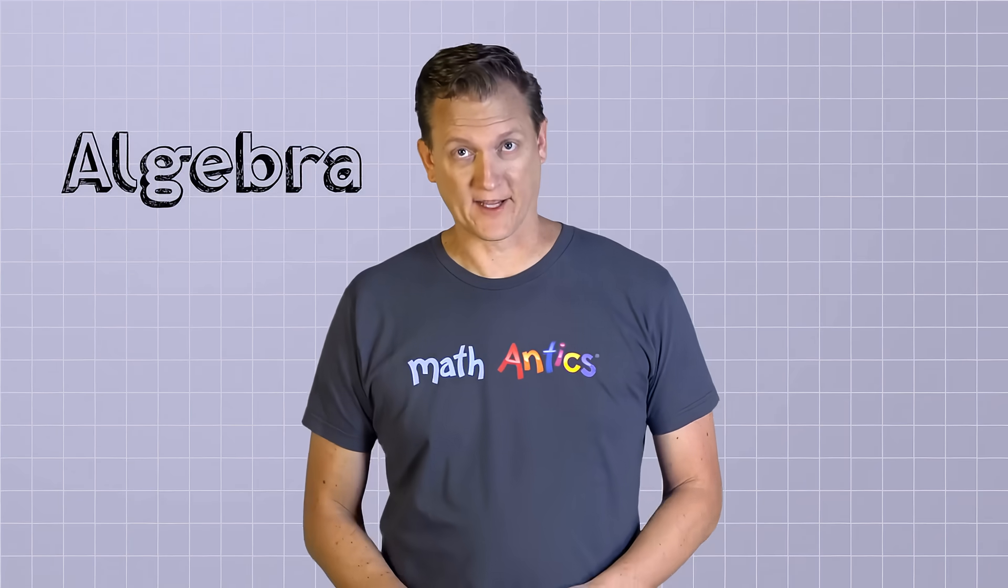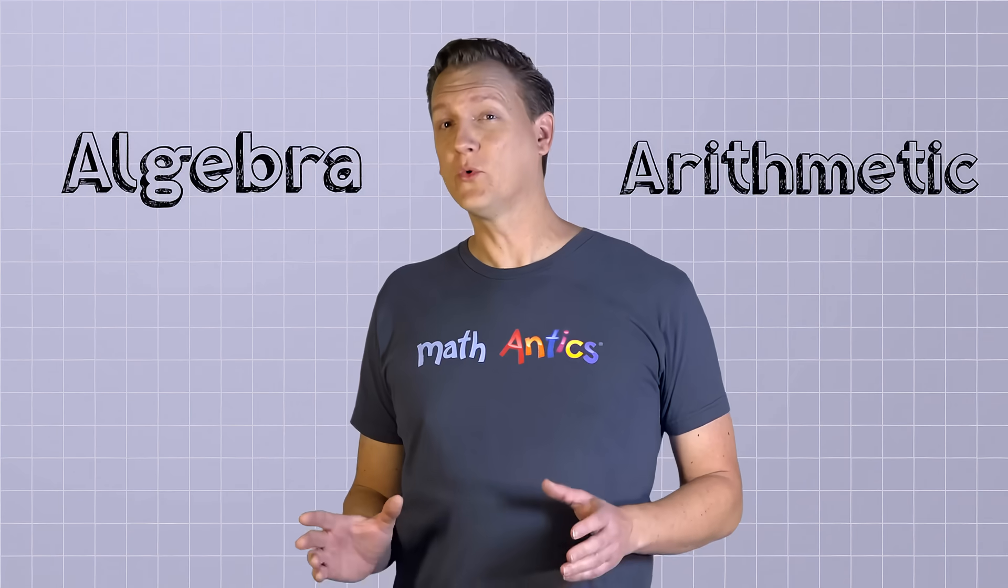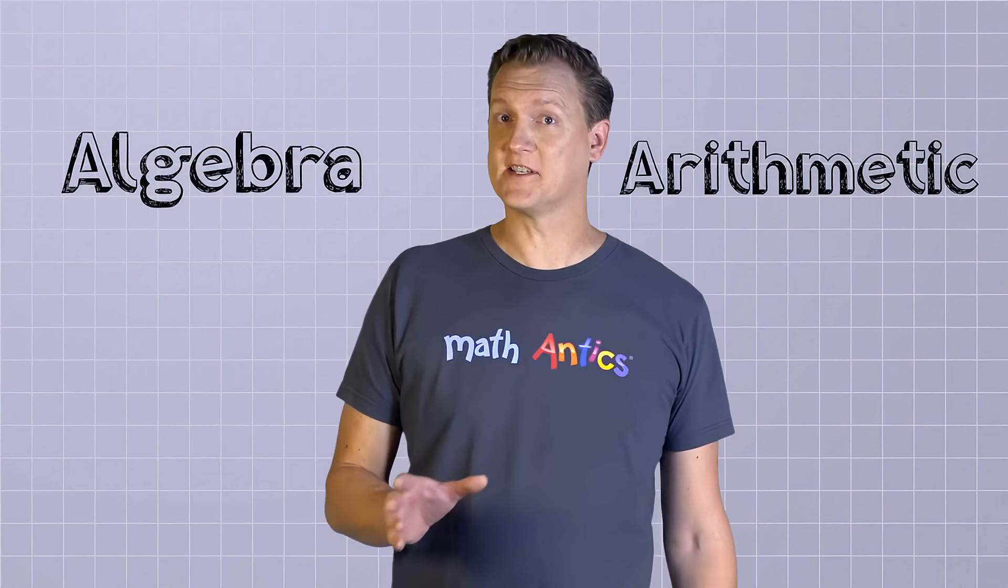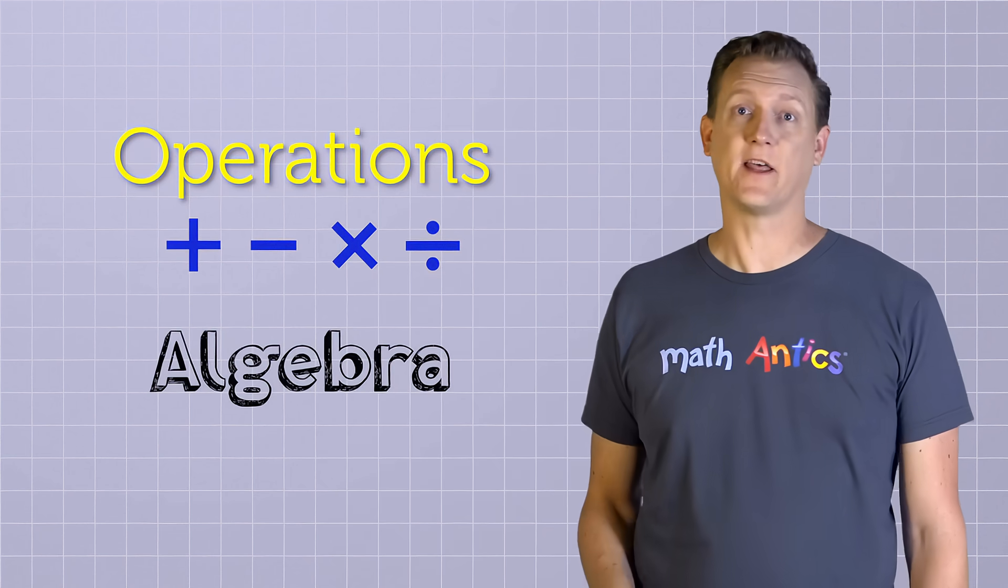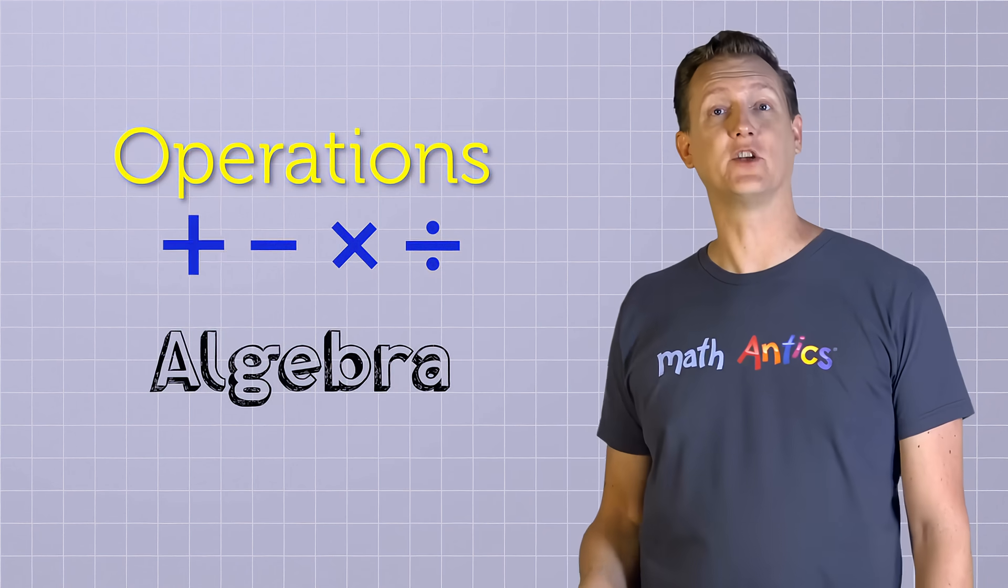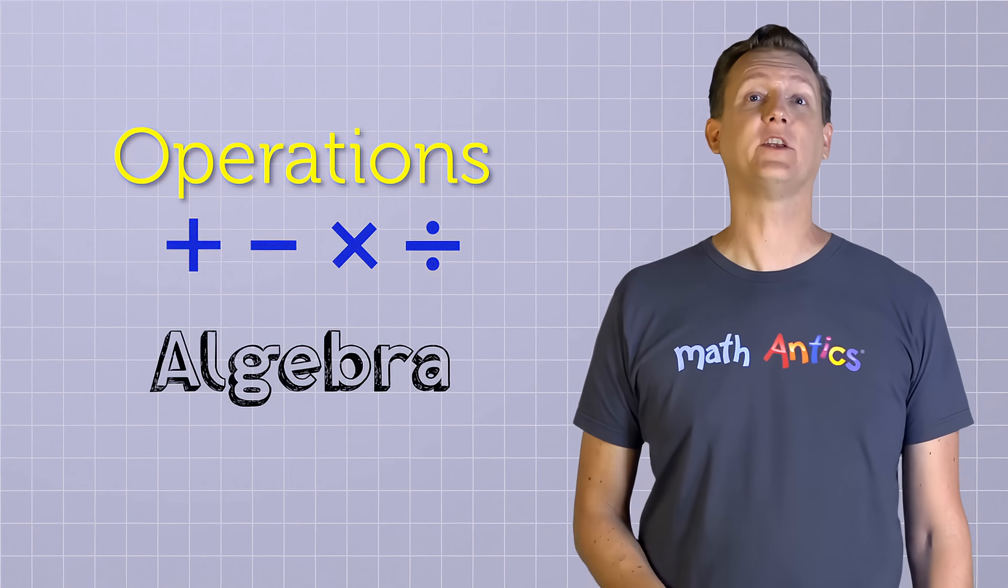Hi, this is Rob. Welcome to Math Antics. In this lesson, we're going to learn some really important things about a whole branch of math called algebra. The first thing you need to know is that algebra is a lot like arithmetic. It follows all the rules of arithmetic, and it uses the same four main operations that arithmetic is built on: addition, subtraction, multiplication, and division.